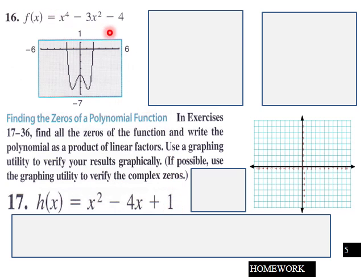Same thing here for 16 and 17. Find all the zeros of the function. Write the polynomial as a product of linear factors. So basically factor it down and then use a graphing calculator to verify your results graphically. Graph this thing.